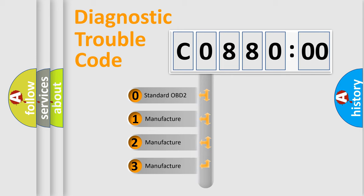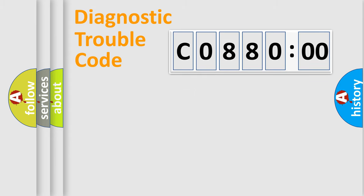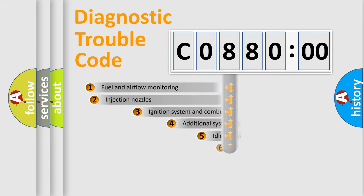If the second character is expressed as zero, it is a standardized error. In the case of numbers 1, 2, or 3, it is a manufacturer-specific expression of the car-specific error.